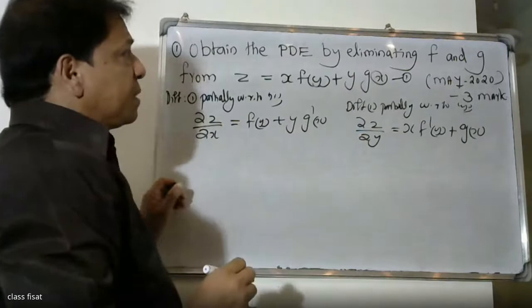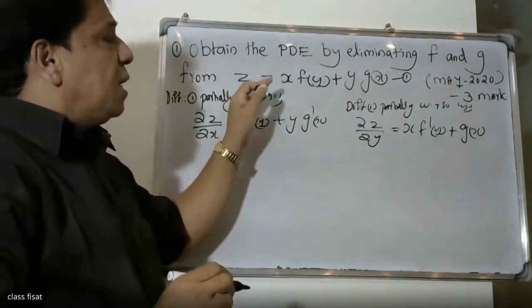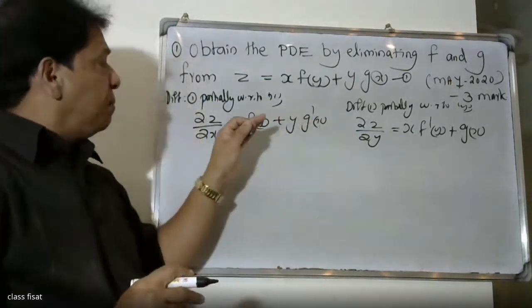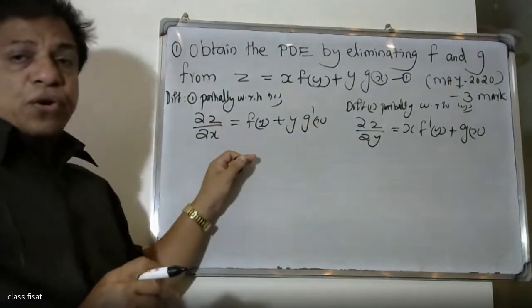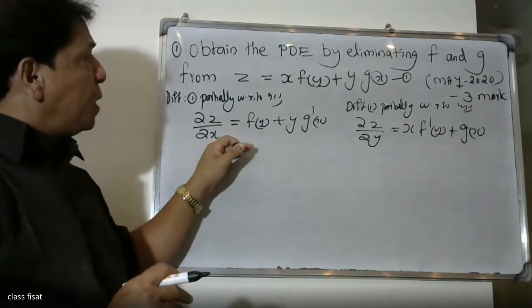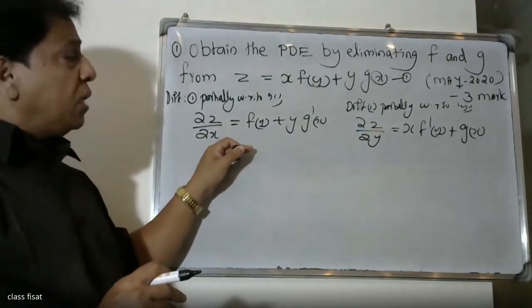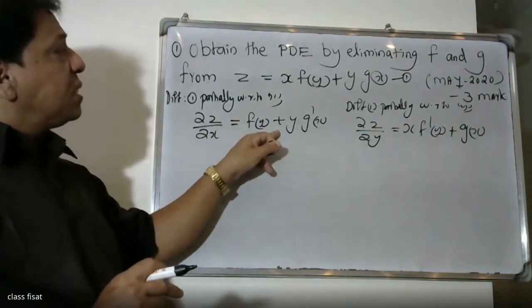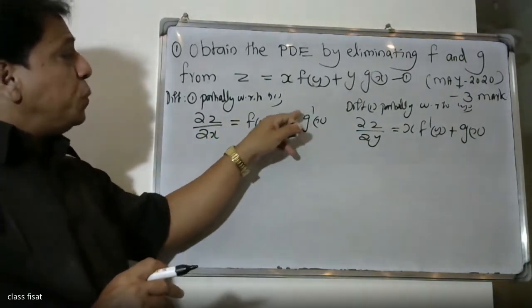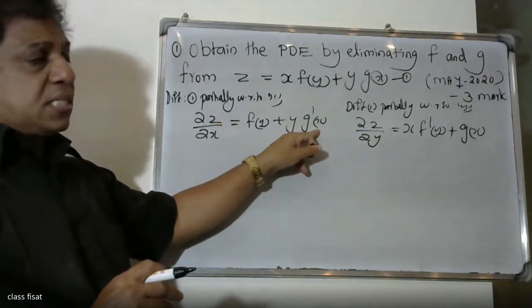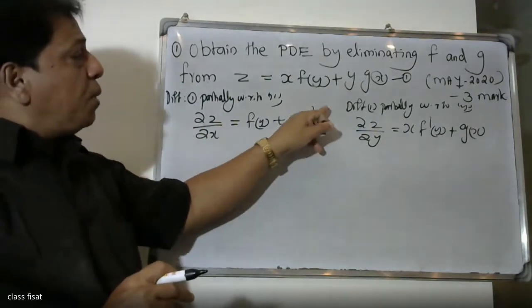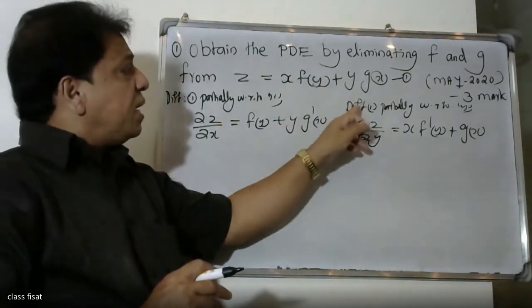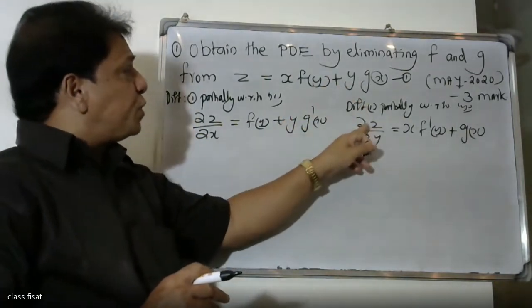If we write the equation, we have: dou z by dou y is equal to x into f dash y plus g of x. This gives us equation two from differentiating with respect to x, and equation three from differentiating with respect to y.